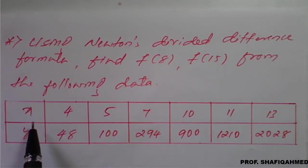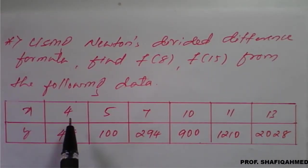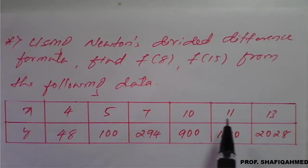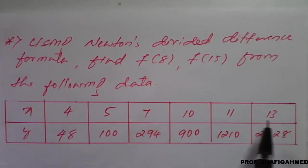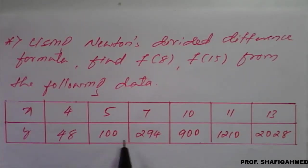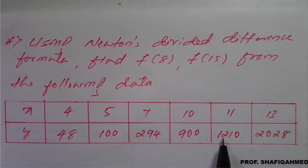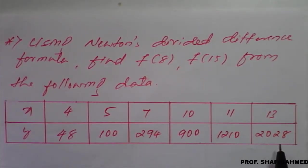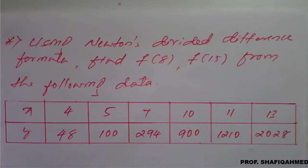The given data: x values are 4, 5, 7, 10, 11, 13, and the respective y values, which are nothing but f of x values, are 48, 100, 294, 900, 1210, and 2028. This is the given data.